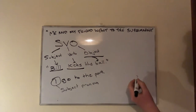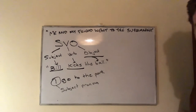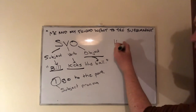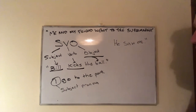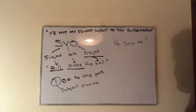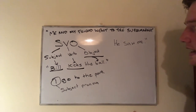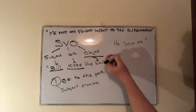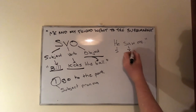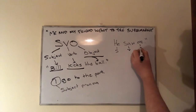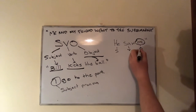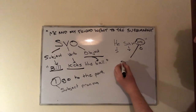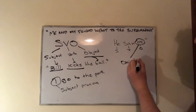Let's consider another example: 'He saw me.' Here, our subject — that which performs the action — is he. Our verb is saw, and me is our object. So me is what's known as an object pronoun.